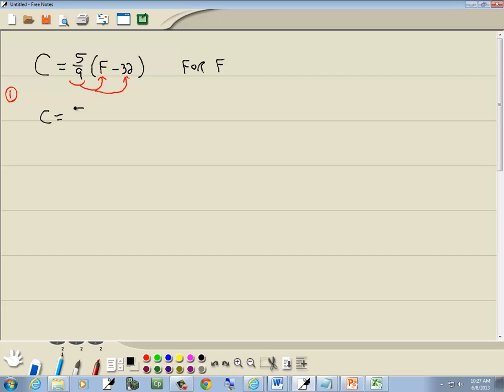So we got 5 ninths times F. And 5 ninths times the negative 32. So we got 5 ninths F minus 160 over 9.